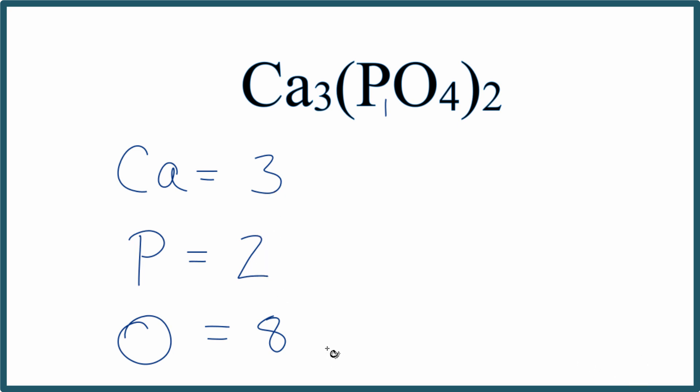If you were asked to figure out how many atoms of, say, phosphorus were in one mole of calcium phosphate, you just multiply this number two by Avogadro's number. So you could take two times 6.02 times 10 to the 23rd, and this would give you the number of phosphorus atoms in one mole of calcium phosphate.